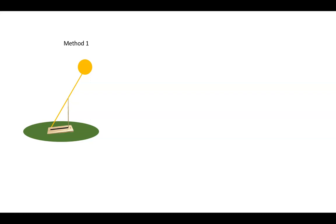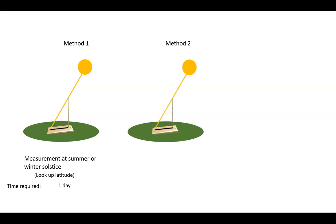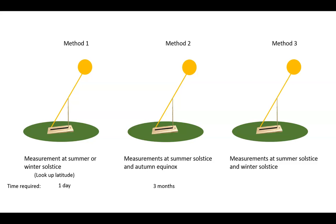There are three methods we can use, and any one of them can be used to obtain the tilt angle. In method one, a measurement is made at the summer or winter solstice. You then look up your latitude from the internet, and then complete the calculation. This can be done in one day. If you want to avoid modern technology and do it like the ancient astronomers did, then method two requires one measurement at the summer solstice or the winter solstice, and one more at the autumn or spring equinox. This will require three months, since a solstice and an equinox are three months apart. A third method is to make one measurement at the summer solstice, and then another at the winter solstice, or in reverse order. This method will require six months, since these solstices are six months apart.